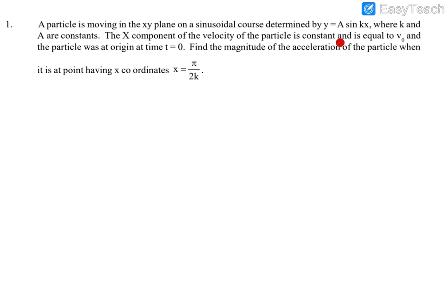it says that the X component of the velocity of the particle is constant and it is V0. The particle was at origin initially. Find the magnitude of acceleration of the particle when it is at point which has X-coordinate π/2K.